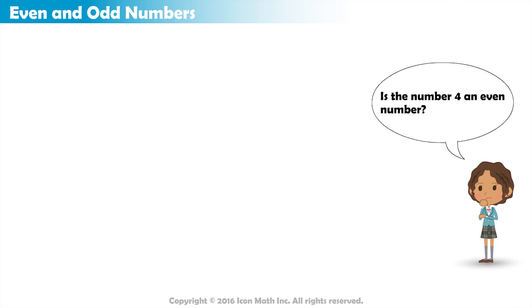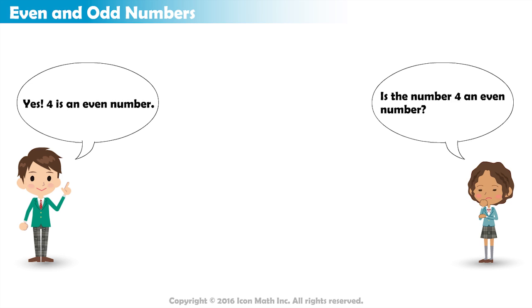What about the number 4? It is also even, because if we have four counters, we can evenly split them into two groups.